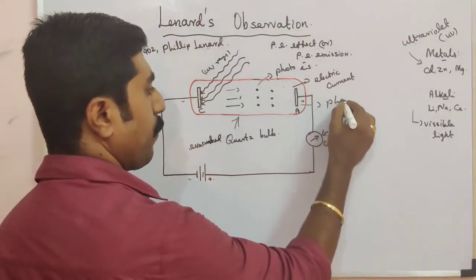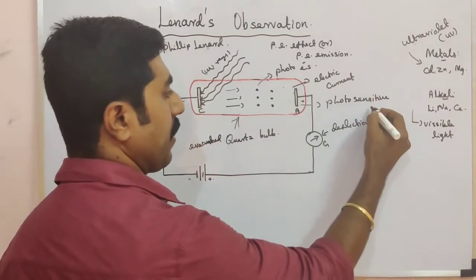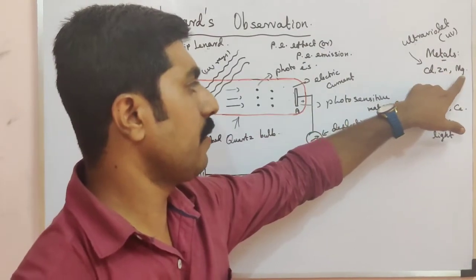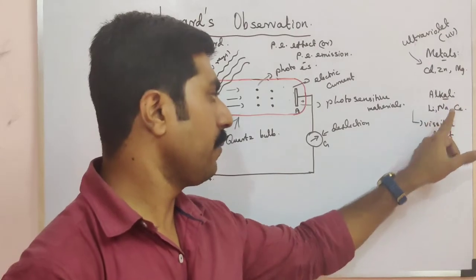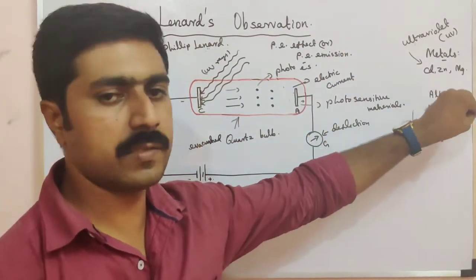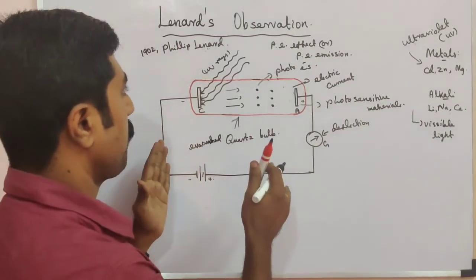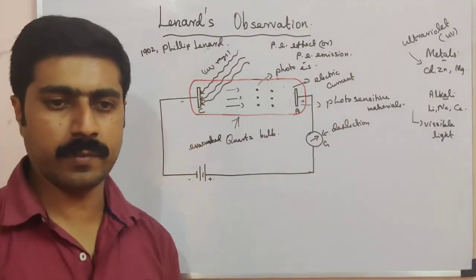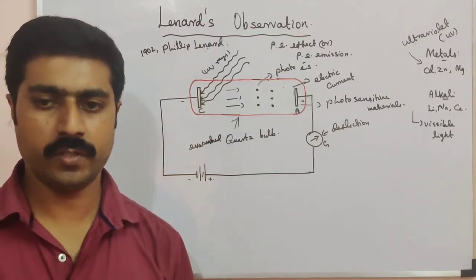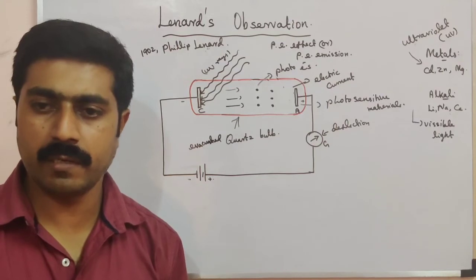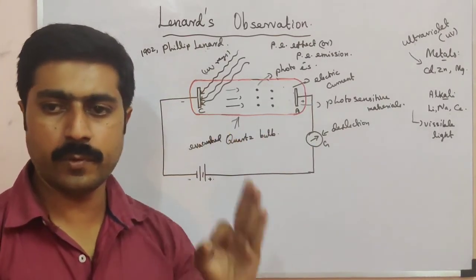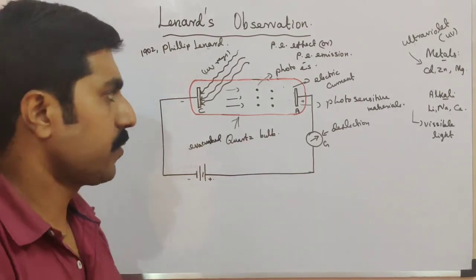The metals that exhibit this property are called photosensitive metals. These include lithium, sodium, and cesium — the alkali metals — which react to visible light. Leonard explained this simple experiment: with the help of electron emission from the cathode, electric current is produced and the galvanometer shows deflection. The current produced is called photoelectric current.